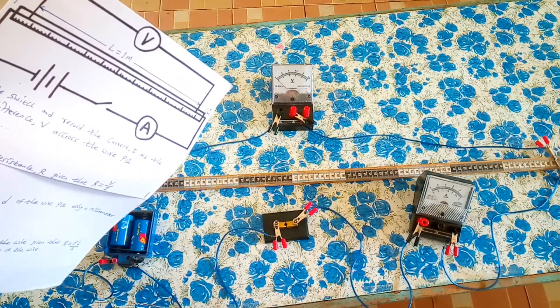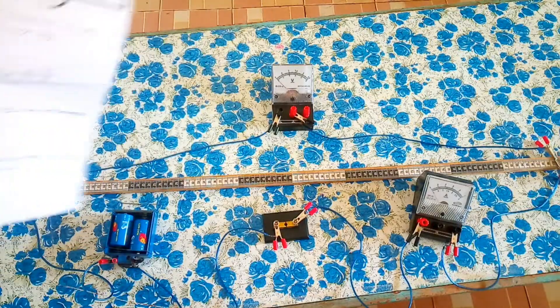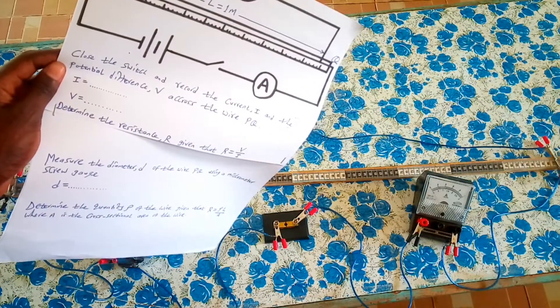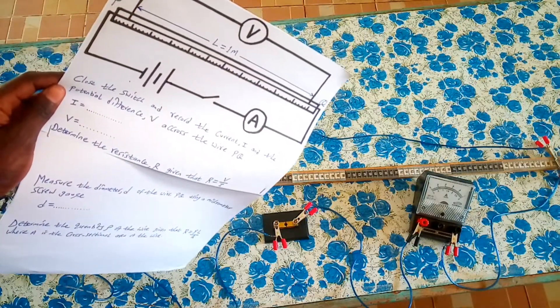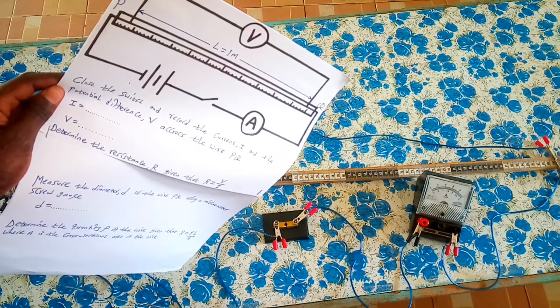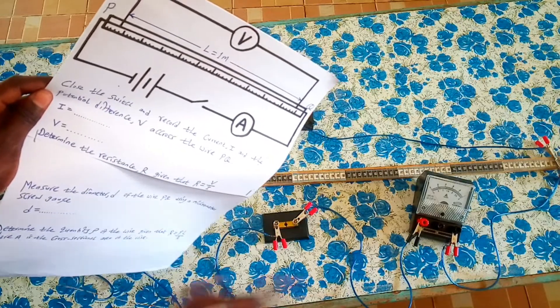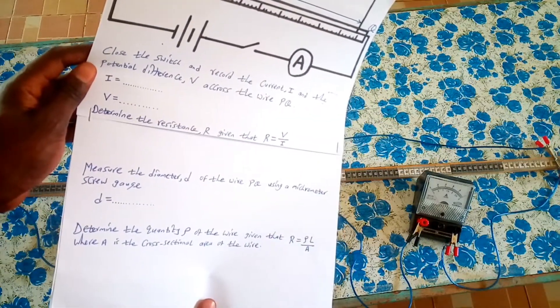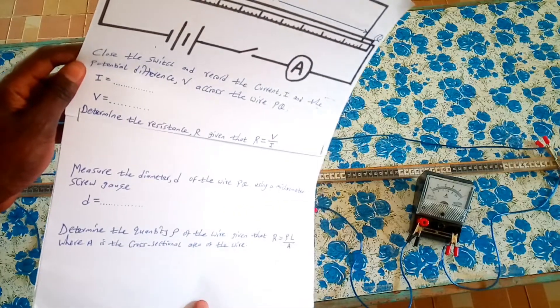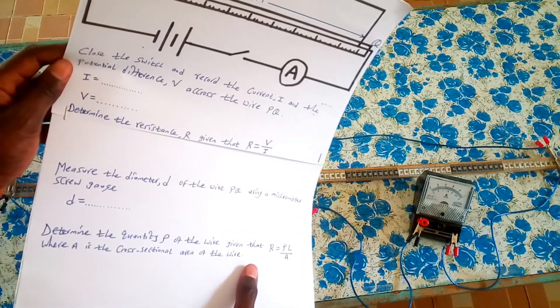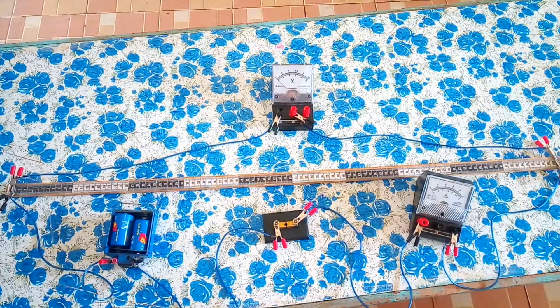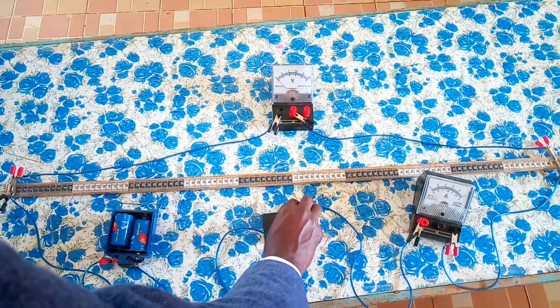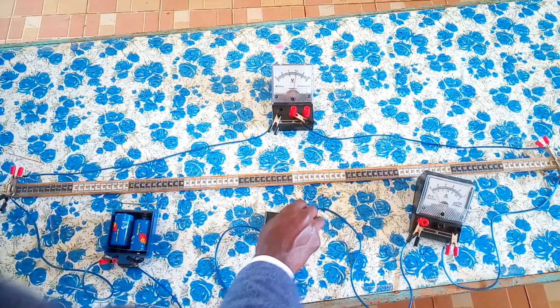We have already done the connection, so we are going to close the switch and then record the current and voltage readings. We are going to close the switch and record the current and the voltage across the wire PQ, and then from there we'll determine the resistance. Then we will determine the resistivity using the formula given down here.